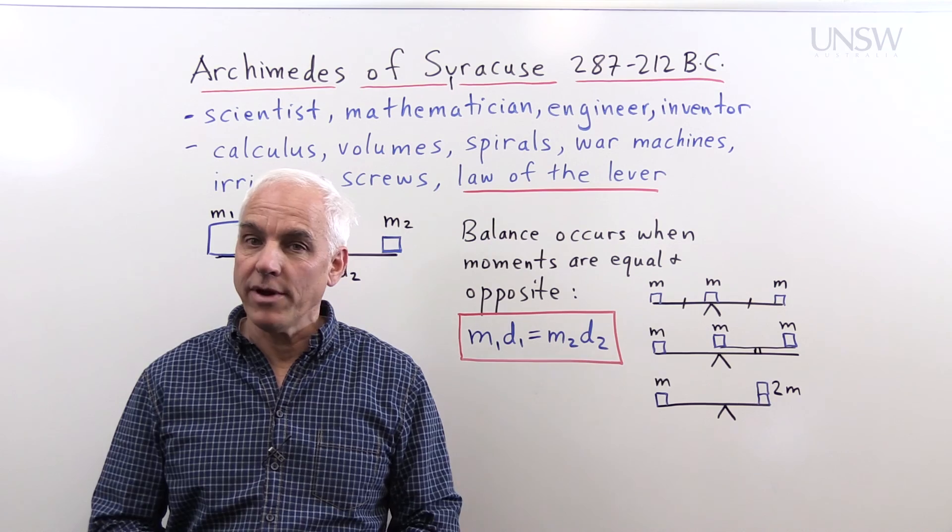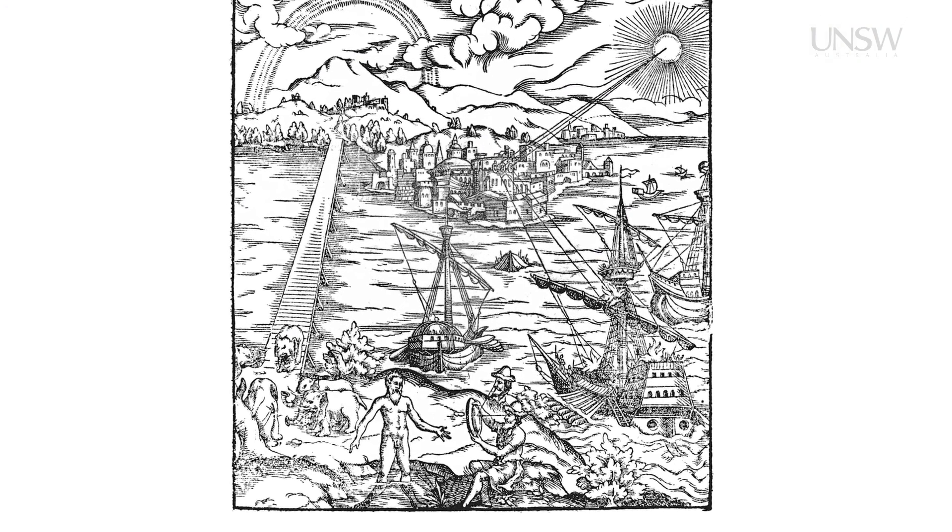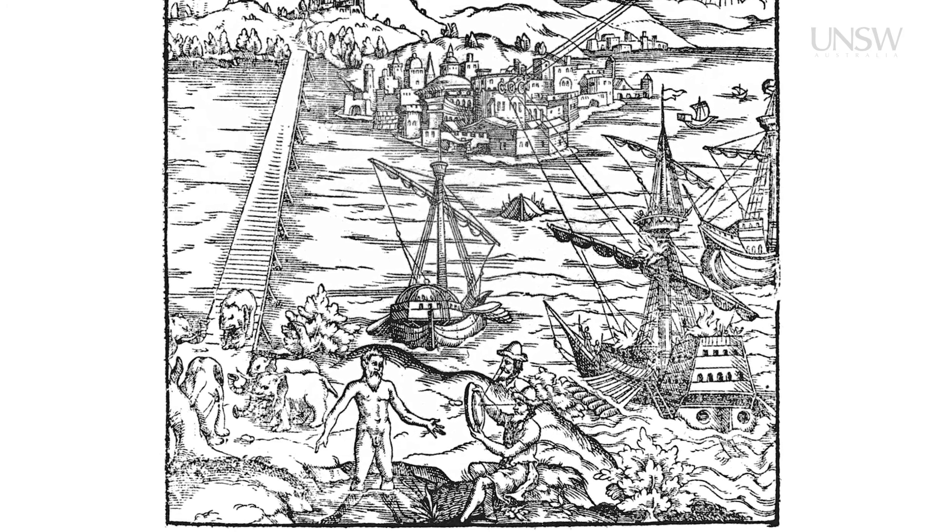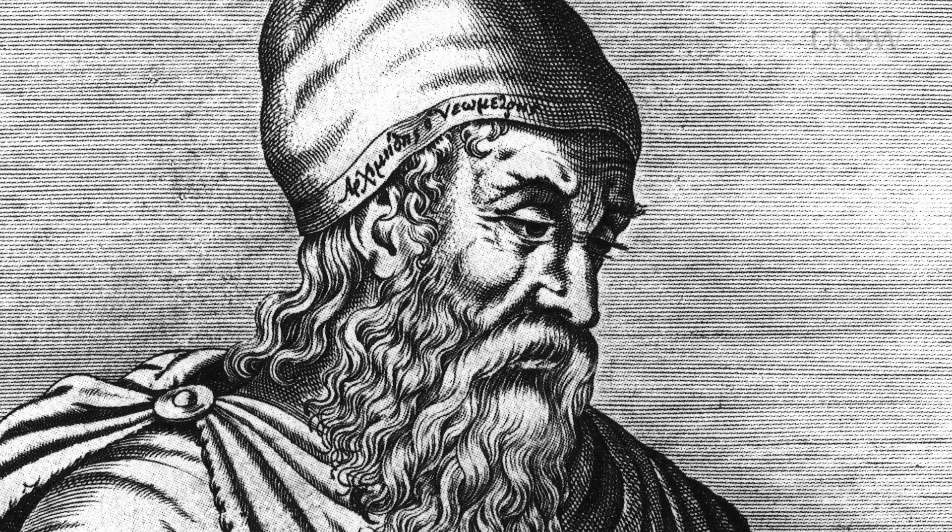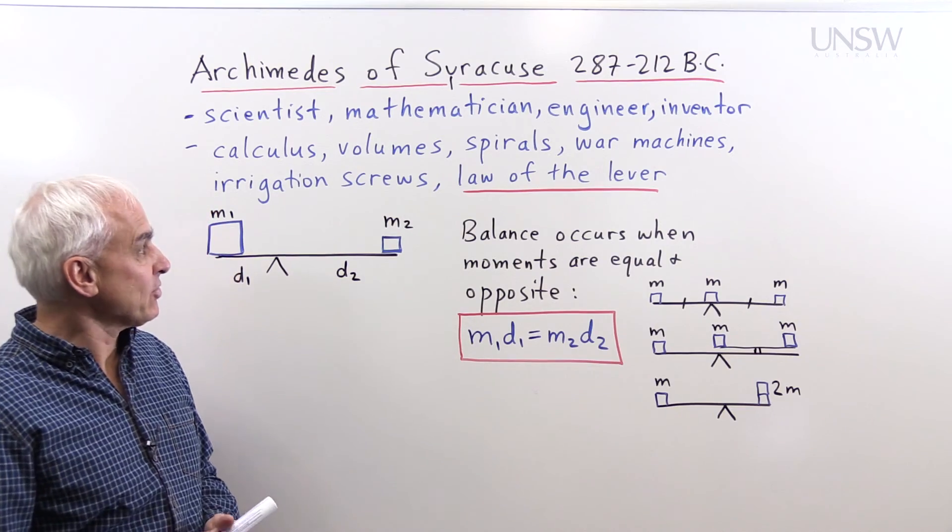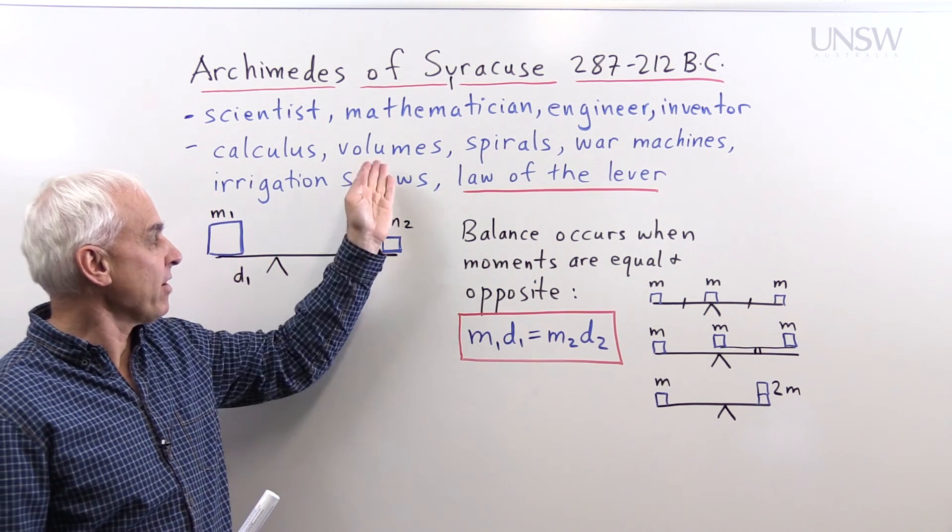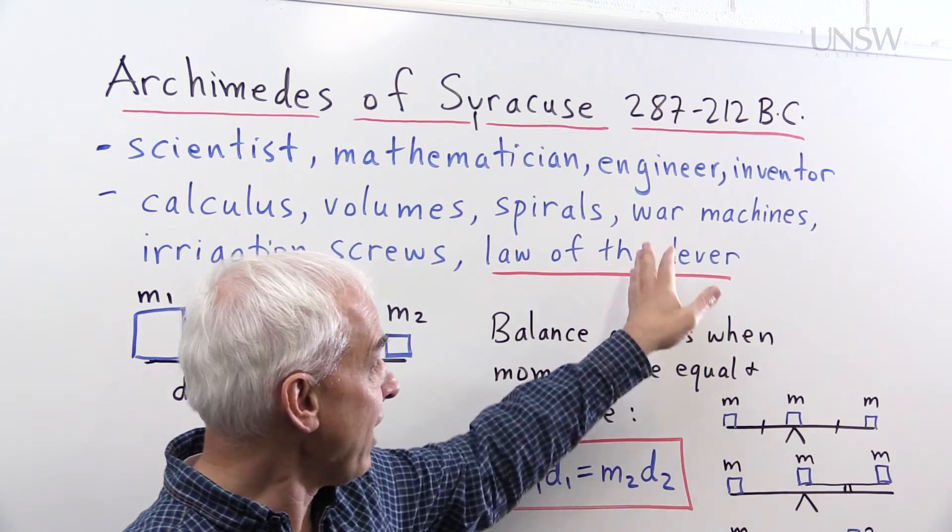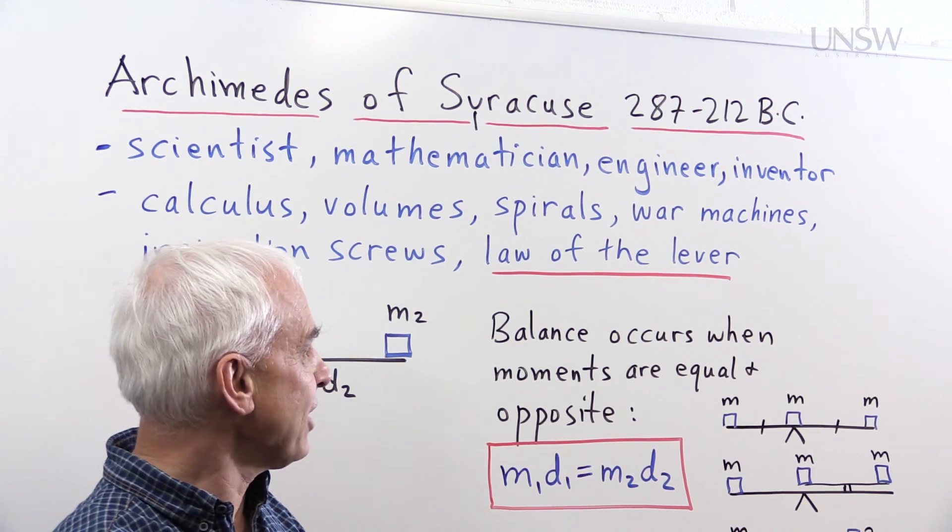Archimedes was born and lived in Syracuse, which was a prominent city in Sicily around this time, 287 to 212 BC. This was a time before the Romans had actually extended their reach into Sicily. So Syracuse was an independent city-state, and he was a very prominent scientist, mathematician, engineer, inventor. And he was responsible for a lot of interesting things, including arguably the development of the calculus. And he made some very important calculations involving volumes, studied curves like spirals and others. He devised war machines and irrigation screws. But what we're going to be interested in mostly today is his law of the lever.